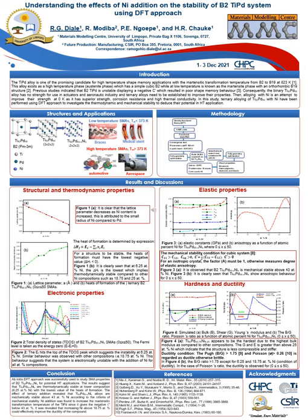Furthermore, we checked the elastic properties to assess the strength of the material by looking into the elastic constants and bulk modulus. In order for a material to be regarded as mechanically stable, there exist inequalities which need to be satisfied. We observed that titanium palladium nickel is mechanically stable above 3 atom percent of nickel. We also found that it shows anisotropic behavior for the intermediate composition range.